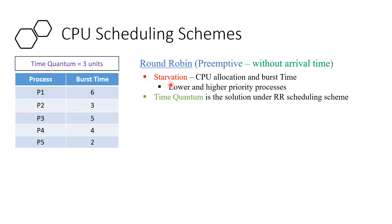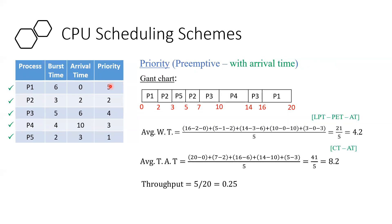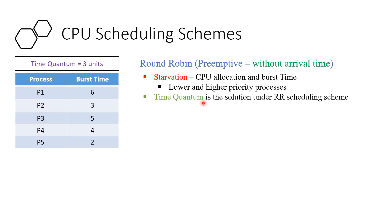Before we discuss the priority scheduling scheme's disadvantages, consider this scenario: a process with priority 5 came first, but because its priority is low, it has to wait a lot. If a process has very low priority and very low burst time, it will not get executed. On the other hand, if the priority is high and the burst time is very high, then all the remaining processes will wait.